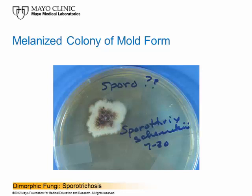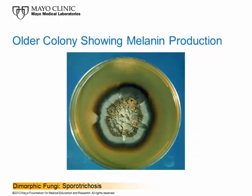You can see someone wrote the name down when they identified it — first they didn't know what it was, as shown by the question mark, but once they looked at it, they knew exactly what it was. This is an older, more mature colony that has melanin throughout the whole colony, and it's turned kind of leather-like and dry. It's totally different from what it started out to be, which was yeast-like. If you were to try to make a mount from this colony, you'd have to take a wire and cut a piece out — it's like cutting a piece of leather.